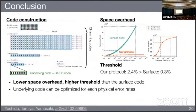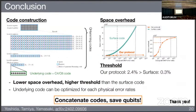Let me summarize. In this work, we constructed a concatenated code by combining the C4-C6 code having a high threshold with the quantum Hamming code having low space overhead. Using this concatenation idea, we constructed a low-space-overhead, high-threshold code that outperforms the surface code. We also showed that the underlying code can be optimized for each physical error rate to achieve better space overhead in each setting. The take-home message: concatenated codes save qubits.